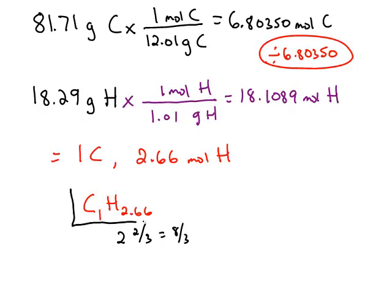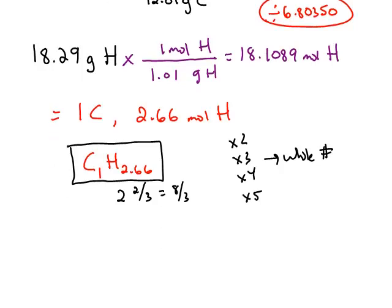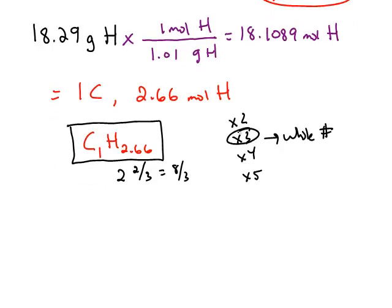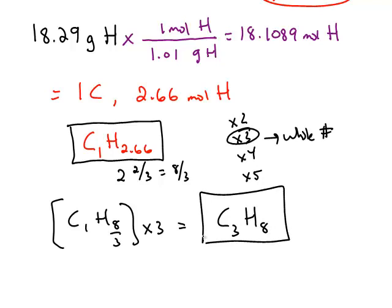So sometimes in a problem, you'll end up with whole numbers at this point, but if not, you may have to multiply by small numbers in order to get them into all whole numbers. So in this example, we would have to multiply everything by 3. So if I take C₁H₈/₃ and multiply each subscript by 3, it's going to give me a final answer of 3 carbons for every 8 hydrogens.